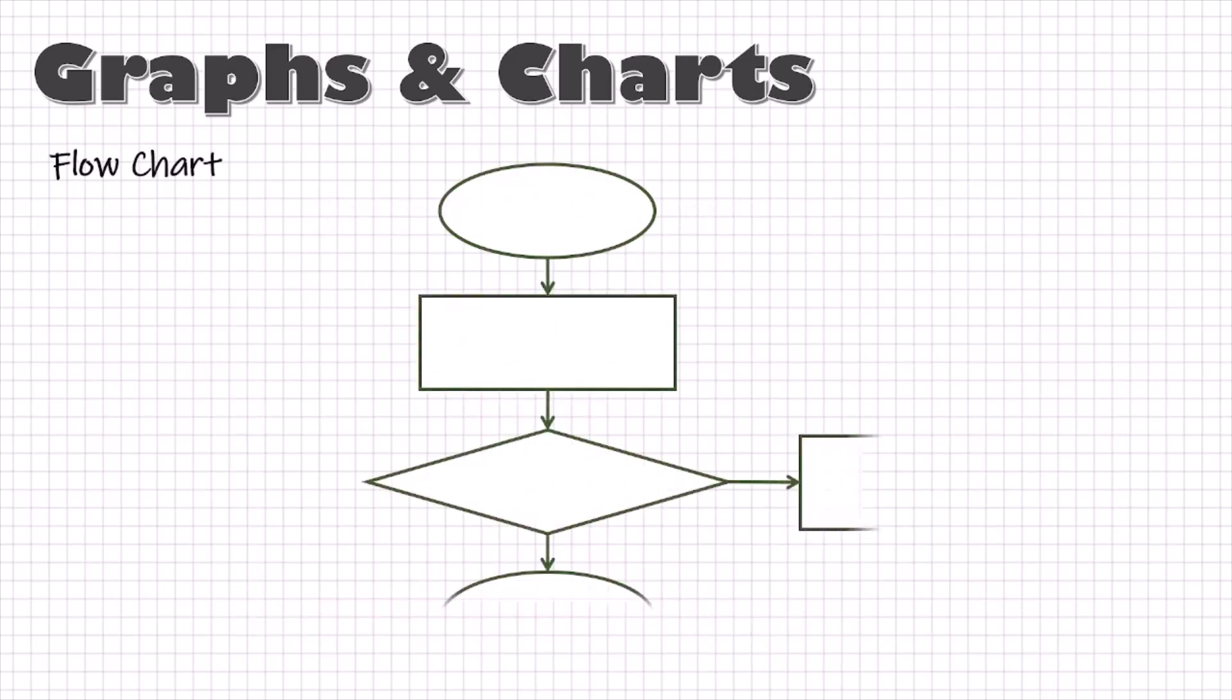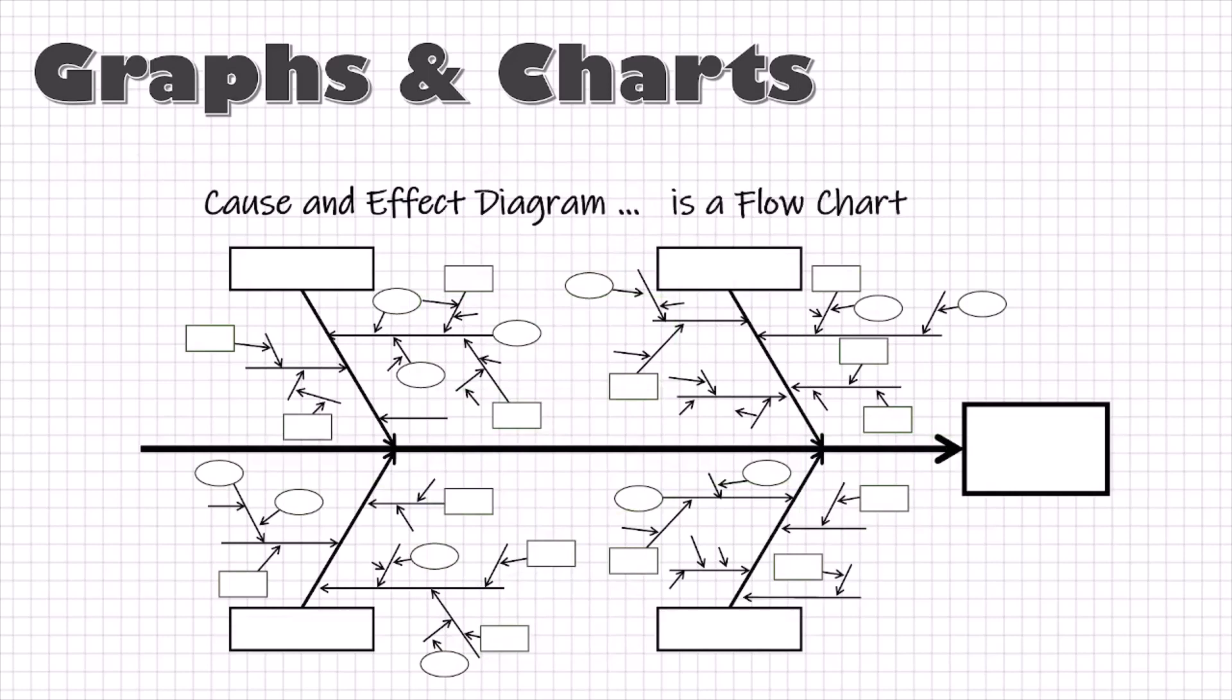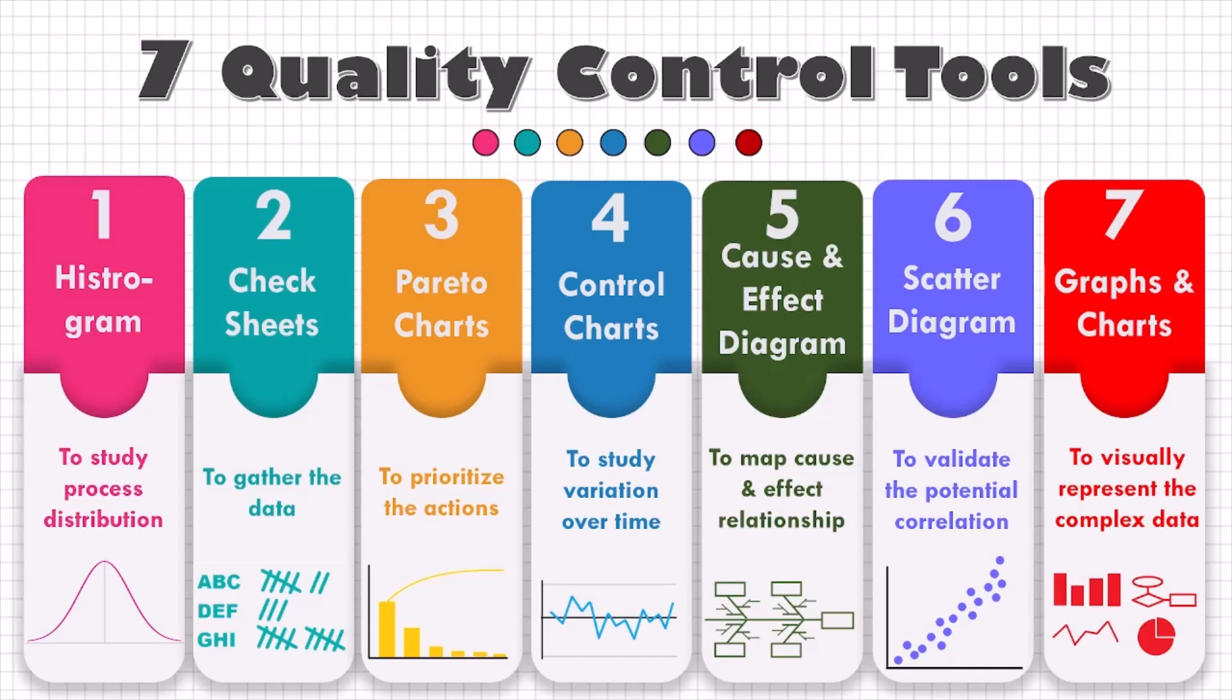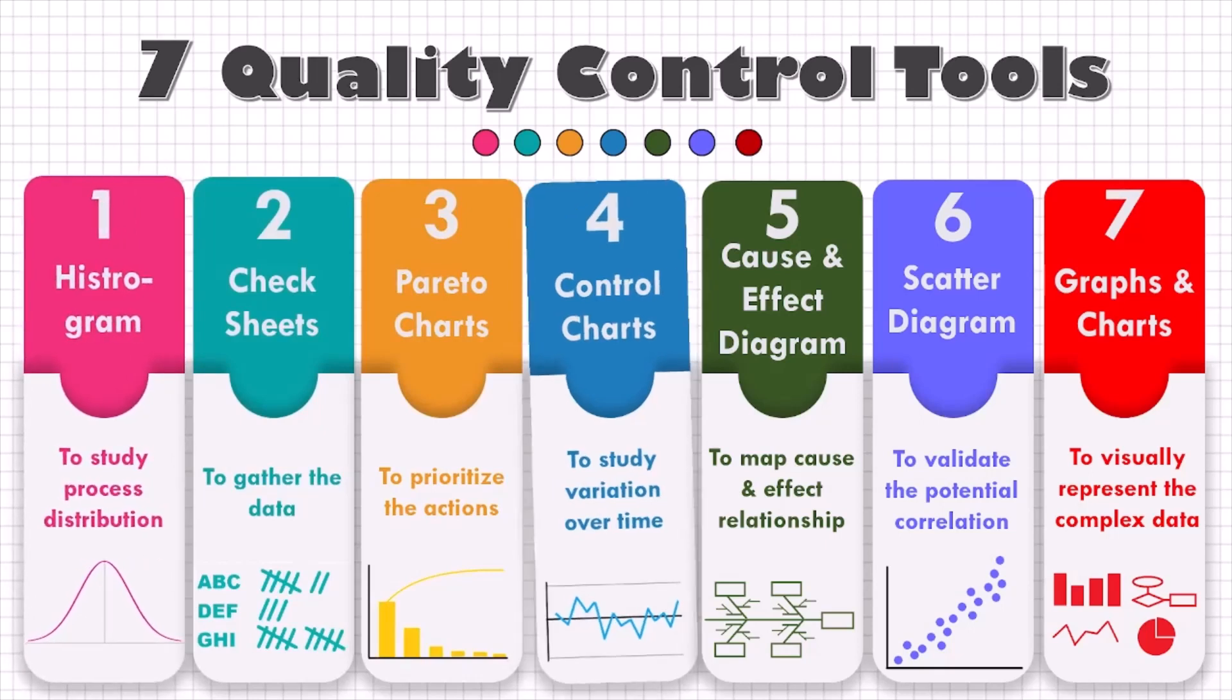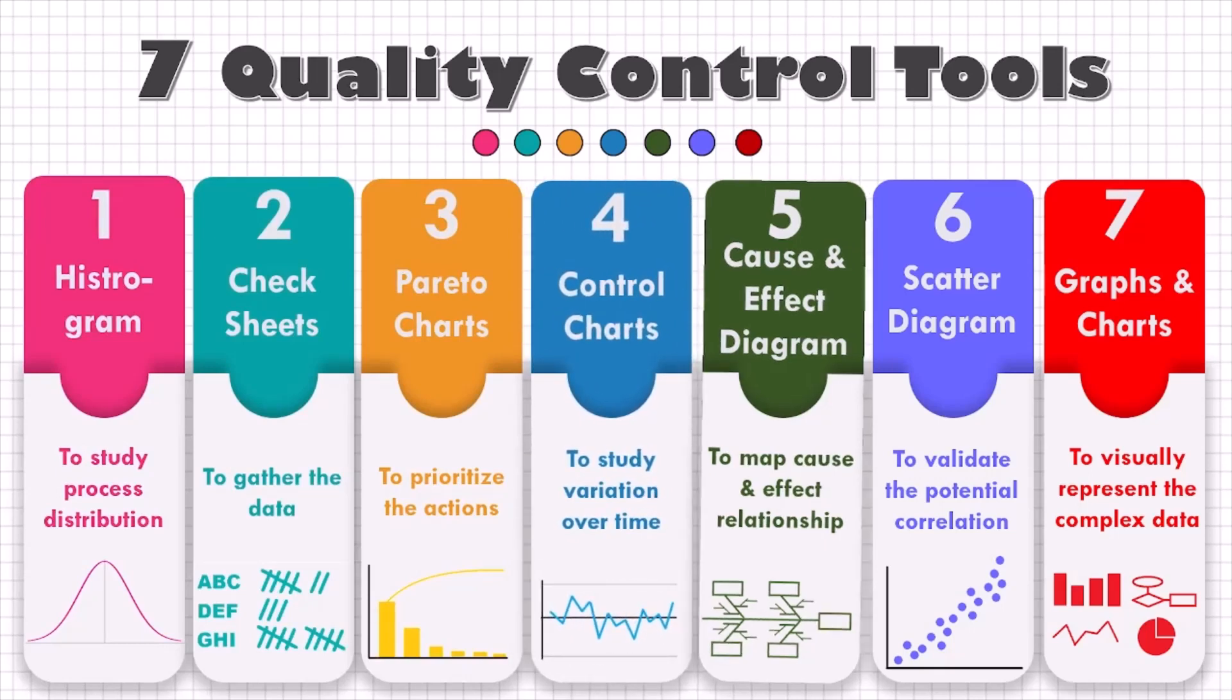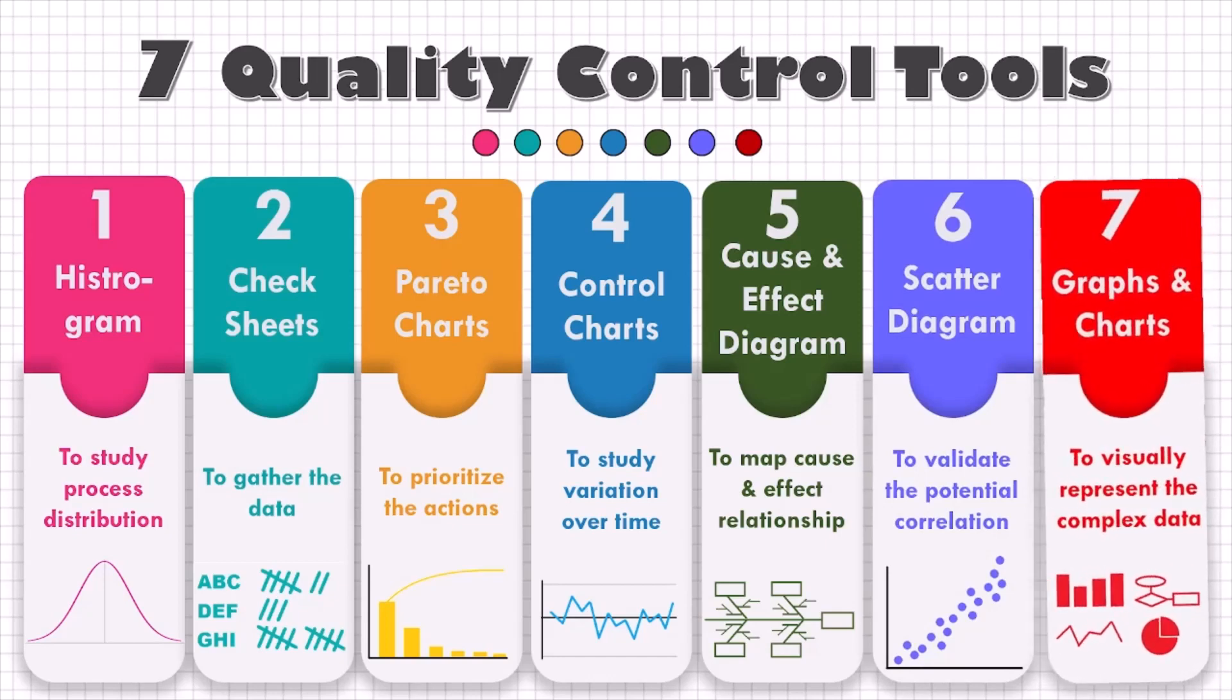Similarly, a flow chart can help you understand the relation between different processes and factors and if you remember we have used it while making cause and effect diagrams. You see, this is why graphs are the most important tool since it makes other tools easier to use and understand. So, these are the original seven QC tools as identified by Professor Ishikawa. Check sheets to gather the data, Pareto chart to prioritize the actions, Histogram to study the process distribution, Control charts to study the variation in process over time, Cause and Effect Diagram to map the cause and effect relationships, Scatter Diagram to find or validate the correlation between cause and effect or between two factors and finally graphs to visually represent the data for easy understanding.